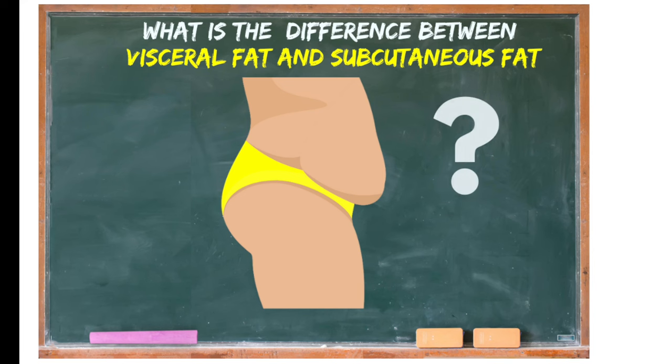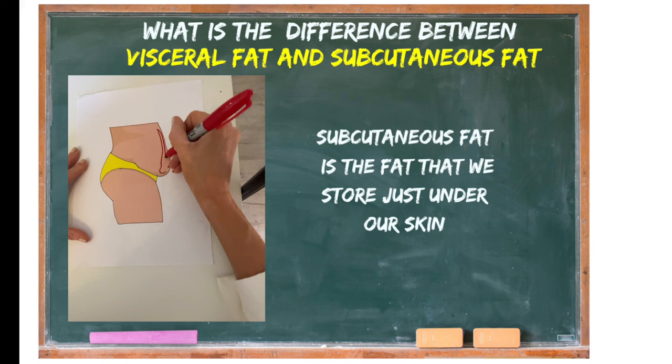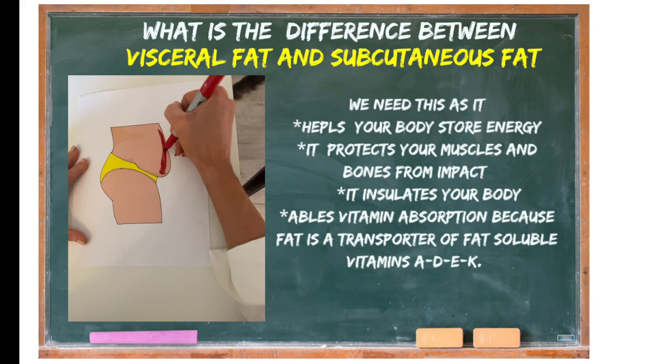What is the difference between visceral fat and subcutaneous fat? Subcutaneous fat is the fat that sits just underneath our skin. We need this as it helps to store energy, it protects your muscles and bones from impact, insulates your body, and it also helps with the transport of vitamins as well.